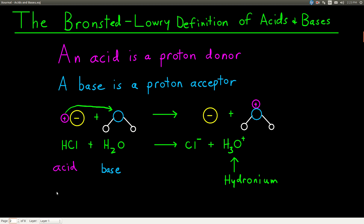So what do we mean by a proton? It just means we write that as H plus — it's just a hydrogen atom without its electrons, so it's just a proton. That's a positive charge. And so an acid is something that donates a proton, gives it away. A base, under this definition, accepts a proton — it's a proton acceptor.